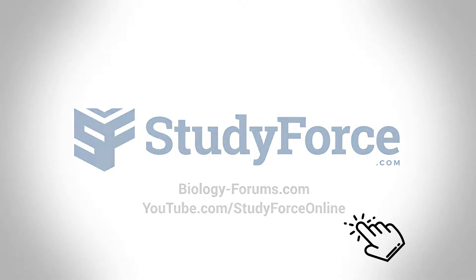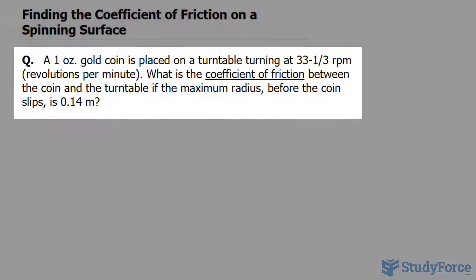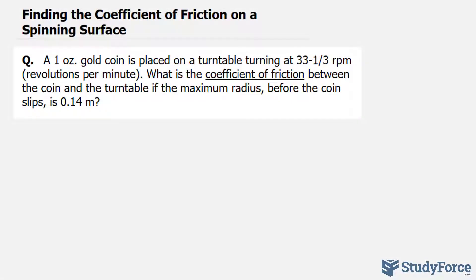In this lesson, I'll show you how to find the coefficient of friction on a spinning surface for an object. The question reads: a one ounce gold coin is placed on a turntable turning at 33 and a third RPM. What is the coefficient of friction between the coin and the turntable if the maximum radius before the coin slips is 0.14 meters?